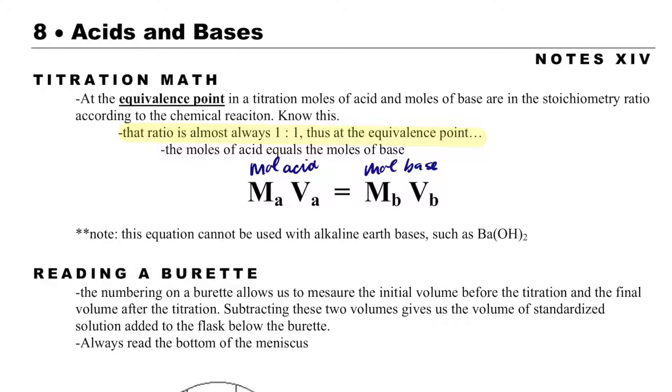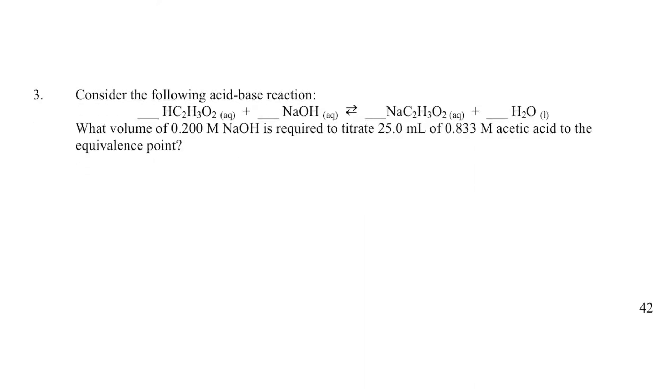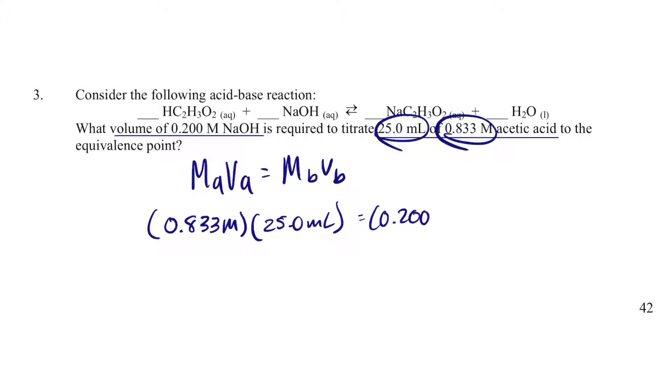Let's go through some examples. I'm going to start with example number three. We are asked what volume of 0.2 molar sodium hydroxide is required for a titration of 25 mils of 0.833 molar acetic acid. So MAVA equals MBVB. The molarity of the acid is 0.833 molar. The volume of the acid is 25.0 milliliters. The molarity of the base is 0.200 molar. And the volume of the base that I need to solve for is just a little bit of math. Because this is milliliters, when I solve for the volume of base, it'll also be milliliters. So I'll get 104.13 milliliters. That's probably as easy as it gets.